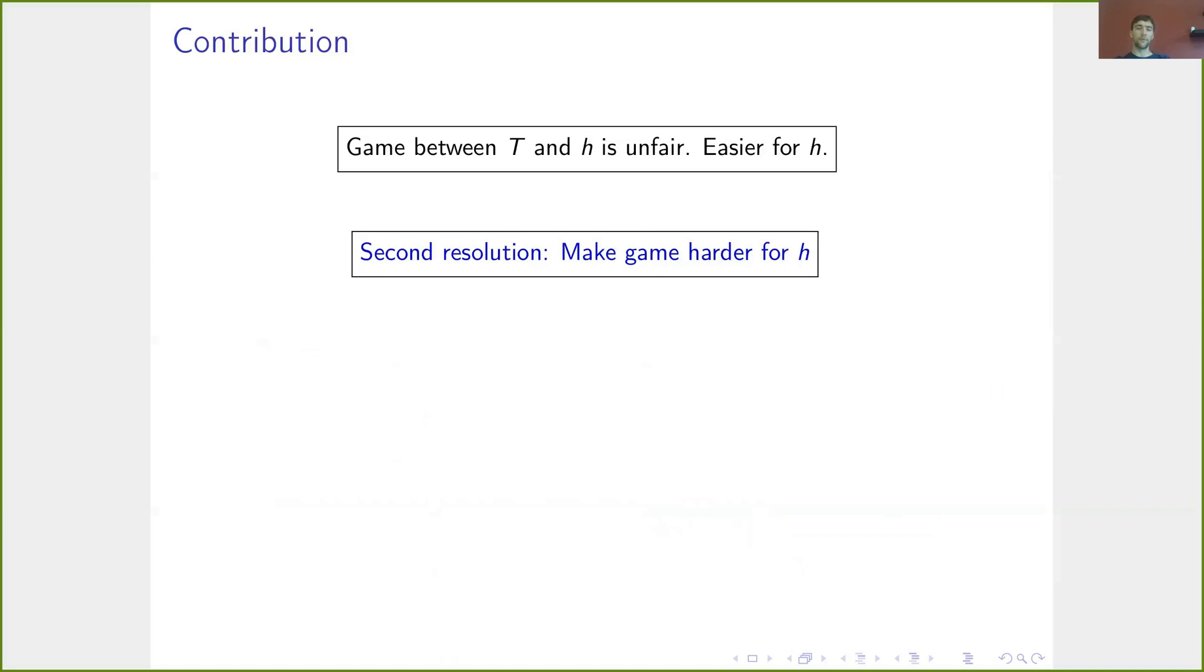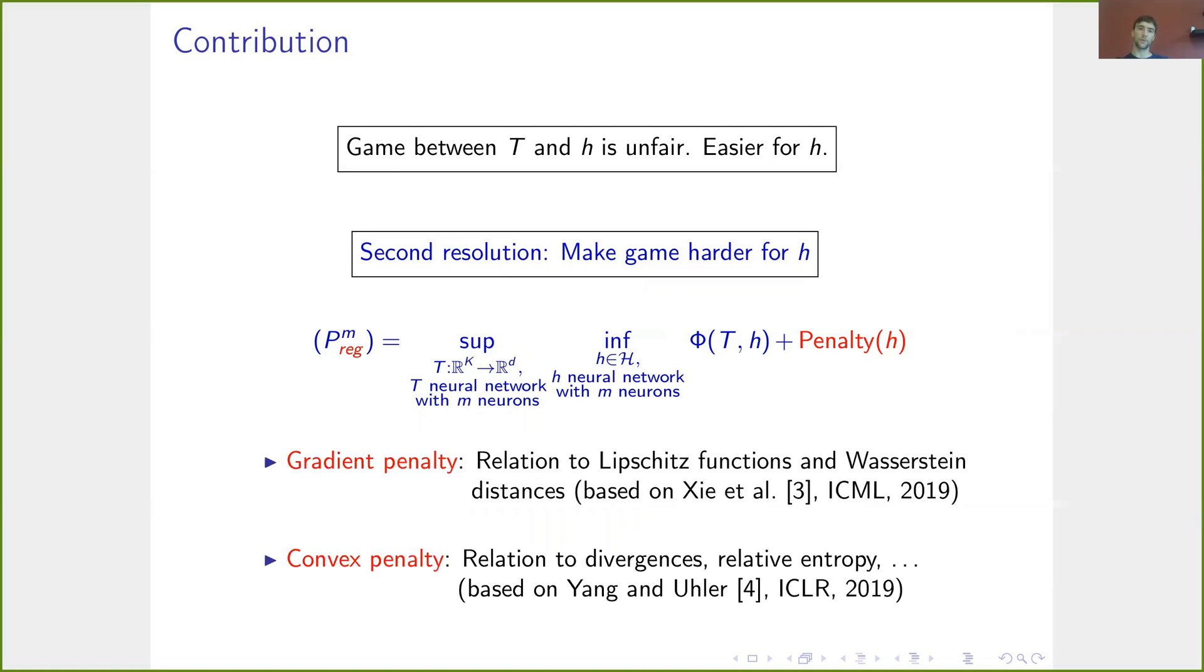The second resolution, however, is the main part of our work and roughly intuitively is to make the game harder for h. So we want to make it harder for h to push the value to minus infinity. And we do this by adding a certain penalty to the objective function. We use two approaches here. The first is a kind of gradient penalty related to Lipschitz functions and Wasserstein distances. And the second is a convex penalty related to f-divergences, relative entropy, and so on.